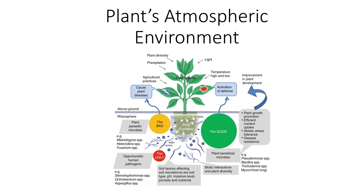Therefore, a grower must be knowledgeable in all aspects of the plant's environment to maximize plant growth and development for high yields and quality crops. The two main areas of the plant's environment are the atmospheric environment—the above-ground portion of the terrestrial plant's environment—and the edaphic environment, which is the soil and area where plant roots are located. Both can be broken down into abiotic non-living factors and biotic living factors. I'm Dr. DeBosk, and in this video I'll focus on the plant's atmospheric environment.